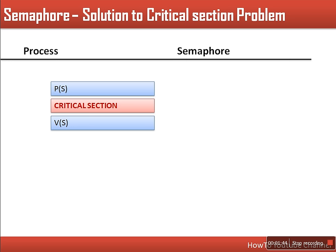So how can the critical section problem be solved using a semaphore? Before entering the critical section, the P operation will be called and it will decrease the value. Let's take a semaphore where the value of S is initially 1. When P is called, it makes this value 0, and after that the process starts its critical section. At the end of the critical section it increases this value again by 1.